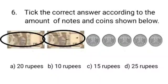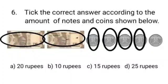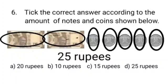10 and 10 is 20, 20 and 1 is 21, 21 and 1 is 22, 22 and 1 is 23, 23 and 1 is 24, 24 and 1 is 25. Total value of these currency notes and coins is Rs. 25.